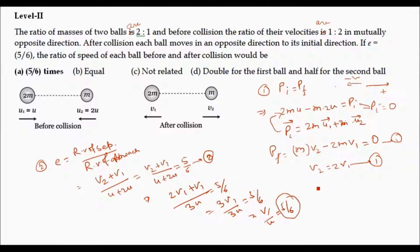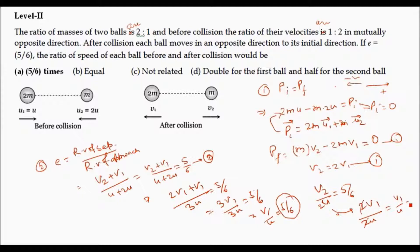Similarly, V2 / 2U = 5/6 as well. From equation 2, substituting V2 = 2V1, we get V2/2U = V1/U = 5/6. So the ratio of velocity of both bodies after to before collision is 5/6. The answer is option A. Our approach in inelastic collision focuses on two equations: conservation of momentum and the coefficient of restitution.